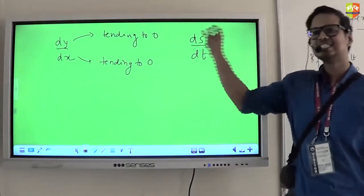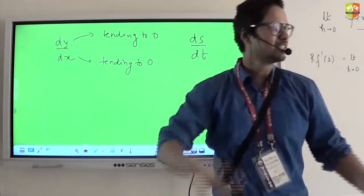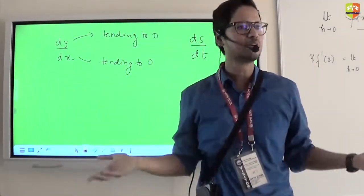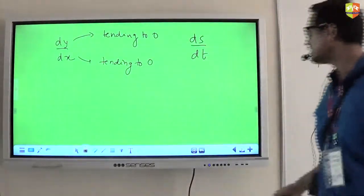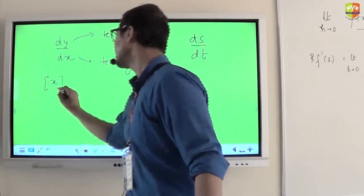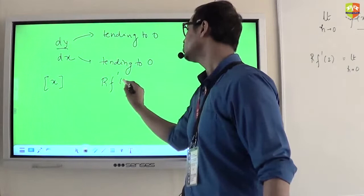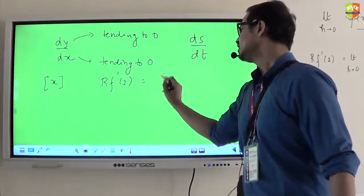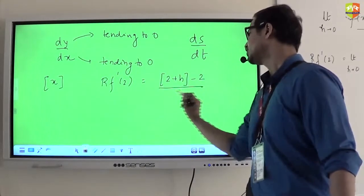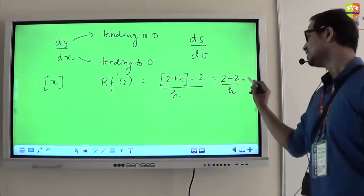But if this quantity is exactly zero, your car is stopping there — there is no displacement. So even if you take 0.00001 second, the displacement is zero; the car has no velocity at all. Now for the GIF function, if I am trying to find out the right-hand derivative at 2: GIF of (2 + h) minus 2, divided by h — that is actually 2 minus 2 divided by h, which is exactly 0.